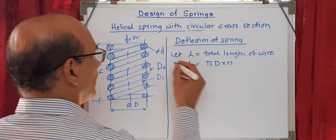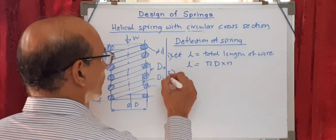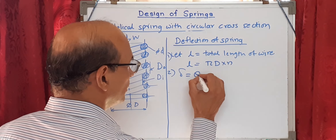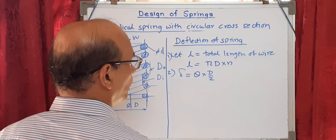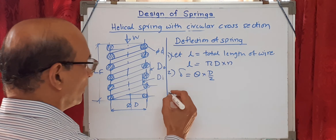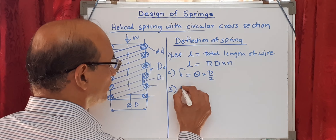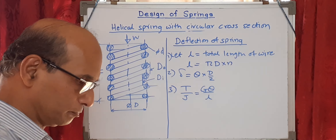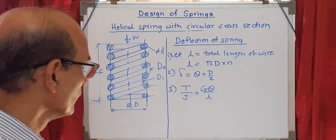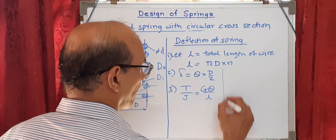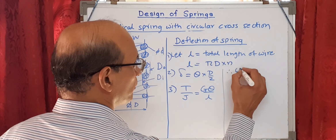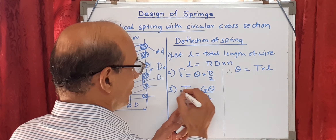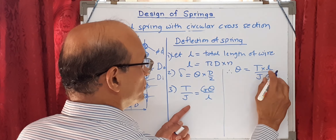We have seen that deflection delta equals theta times d over 2, and that T upon J equals G·theta upon L. Therefore, theta is equal to T·L upon J·G.